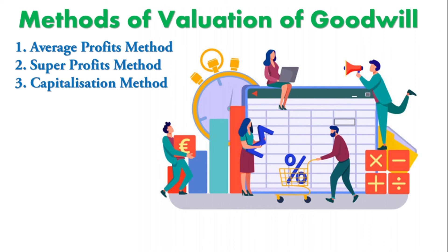We talked about when we need to evaluate goodwill, but now which methods will we use to evaluate it? There are three methods usually: the first is the Average Profit Method, the second is the Super Profit Method, and the third is the Capitalization Method. These are the three techniques for evaluating goodwill. We'll get into these three evaluation methods in coming videos.